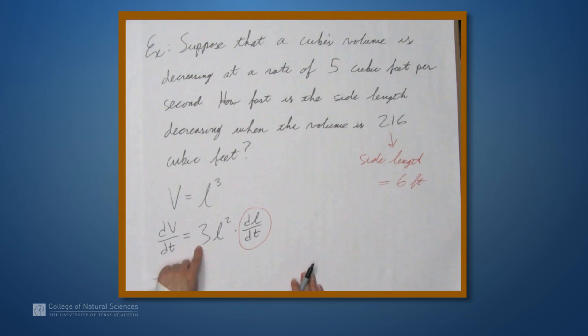So, dV/dt is negative 5. 3 times l squared is really 3 times 6 squared. So, 3 times 6 squared times dl/dt, which is the thing we want.